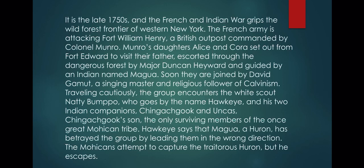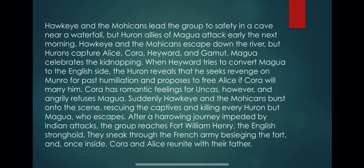Traveling cautiously, the group encounters the white scout Natty Bumpo, who goes by the name Hawkeye, and his two Indian companions Chingachgook and Uncas — Chingachgook's son and the only surviving member of the once great Mohicans tribe. Hawkeye says that Magwa has betrayed the group by leading them in the wrong direction. The Mohicans attempt to find safety in a cave near a waterfall, but Huron allies of Magwa attack early the next morning. Hawkeye and the Mohicans escape down the river.